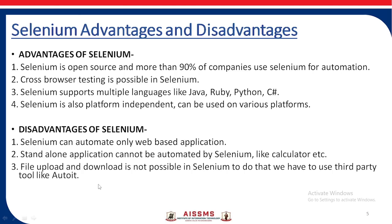The advantages of Selenium are: Selenium is open source and more than 90% of companies use Selenium for automation. It is also platform independent and can be used on various platforms. It supports multiple languages like Java, Ruby, and Python. Cross-browser testing is also possible in Selenium.